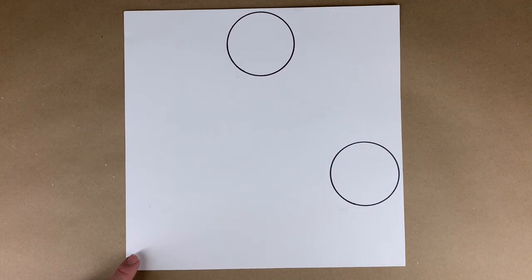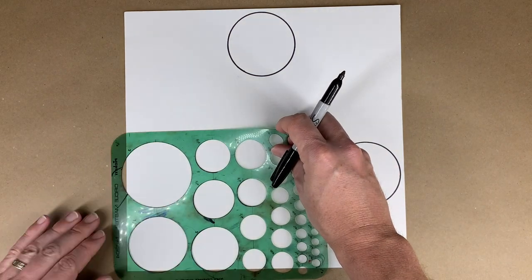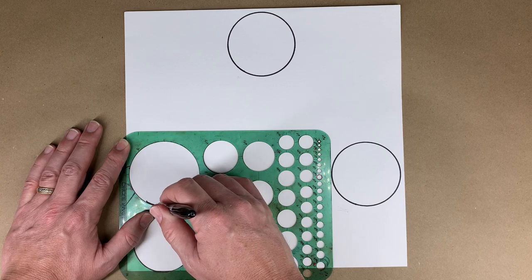Do the same thing on the left side of your page. Put your hand down, measure four fingers up from the bottom of the page. Put your circle stencil down. Trace another circle.